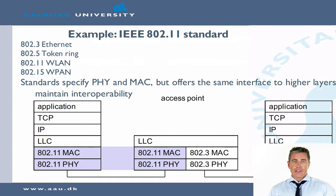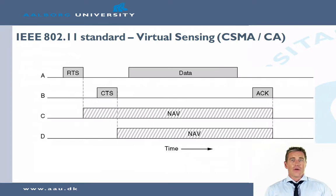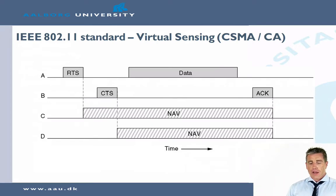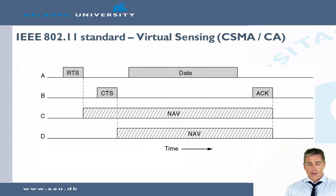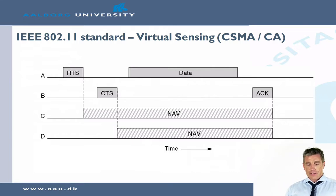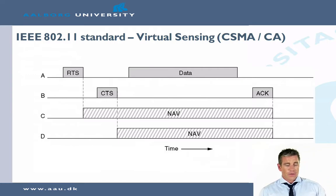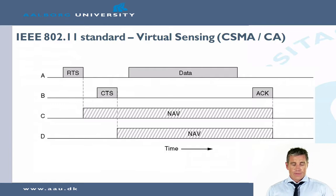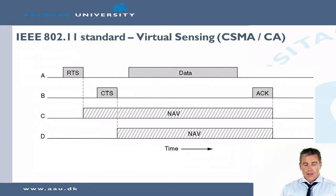So let's look at 802.11. We have virtual sensing, so we have CSMA — carrier sense multiple access — and we have collision avoidance. As we have seen in some of the previous videos, if A wants to send data to B, A will send a request to send, and B will then reply with a clear to send, the CTS.